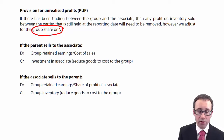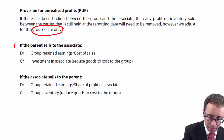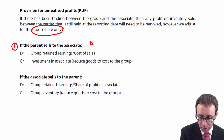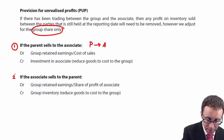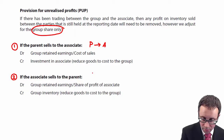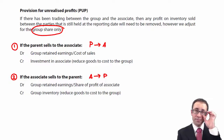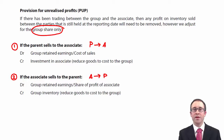There are two scenarios to look at. The first one is whereby the parent sells to the associate — P sells to A. The second scenario is whereby the associate goes through and sells to the parent. The key point is we need to think about who has the profit on the sale and who has the inventory.